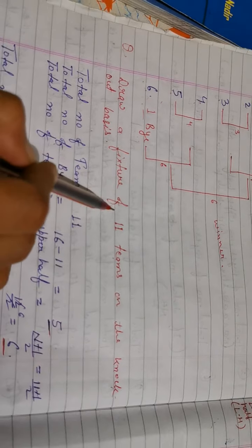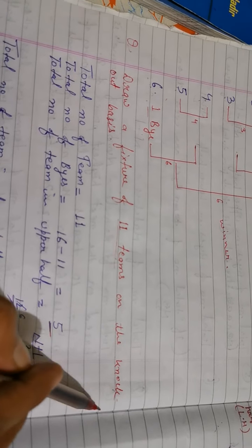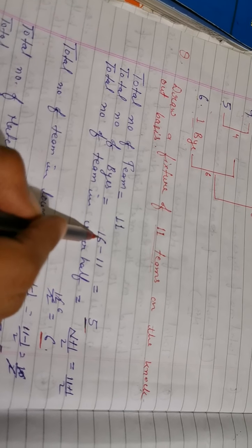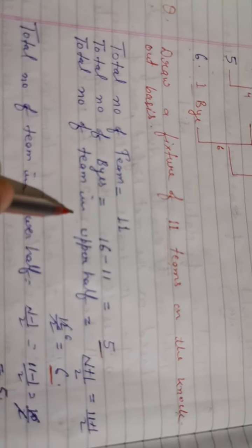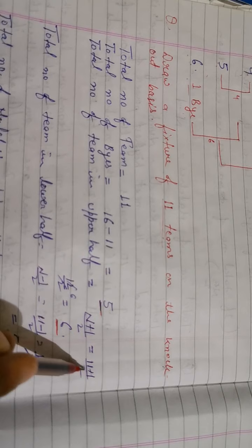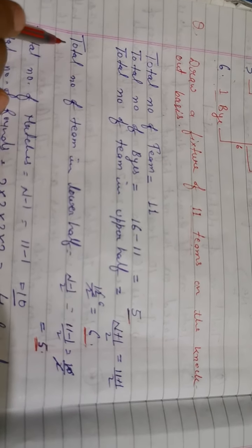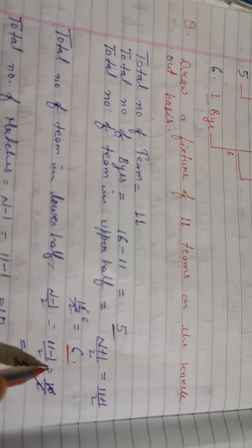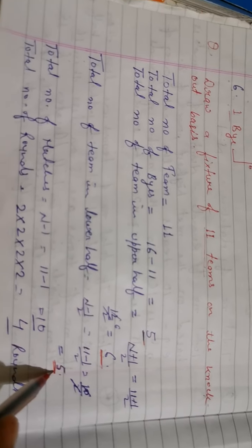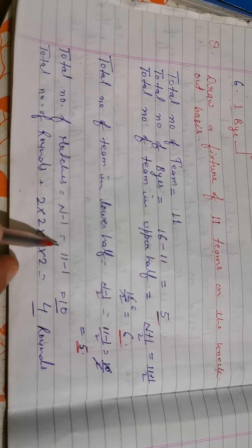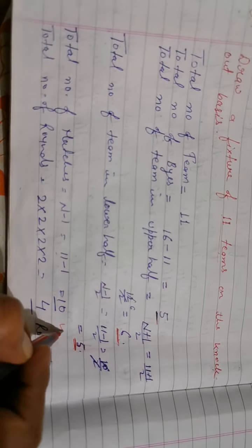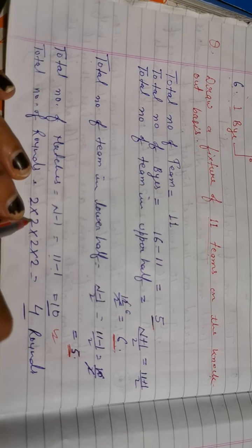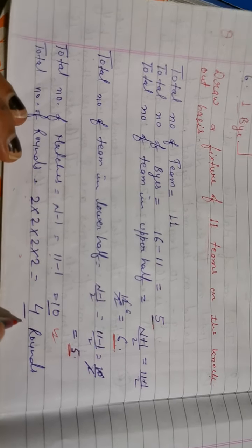Now draw a fixture for 11 teams on a knockout basis. Total teams N = 11. Total byes: next power of 2 is 16, so 16 minus 11 = 5 byes. Total teams in upper half: (11+1)/2 = 6 teams. Total teams in lower half: (11−1)/2 = 5 teams. Total matches: 11 minus 1 = 10 matches. Total rounds: next power of 2 of 11 is 16, and 2→4→8→16 gives 4 rounds.